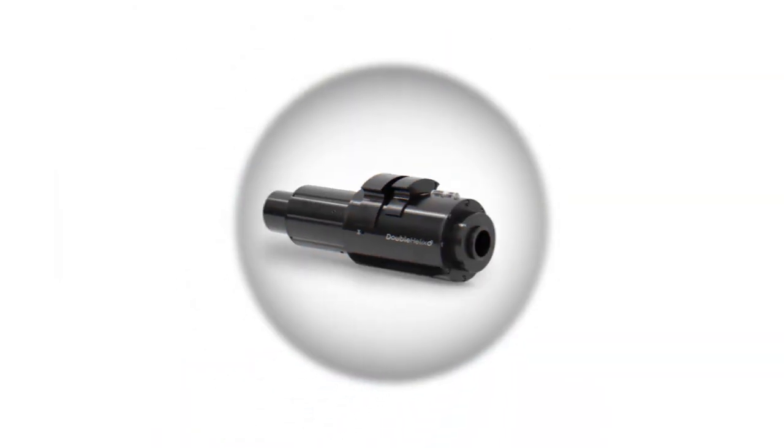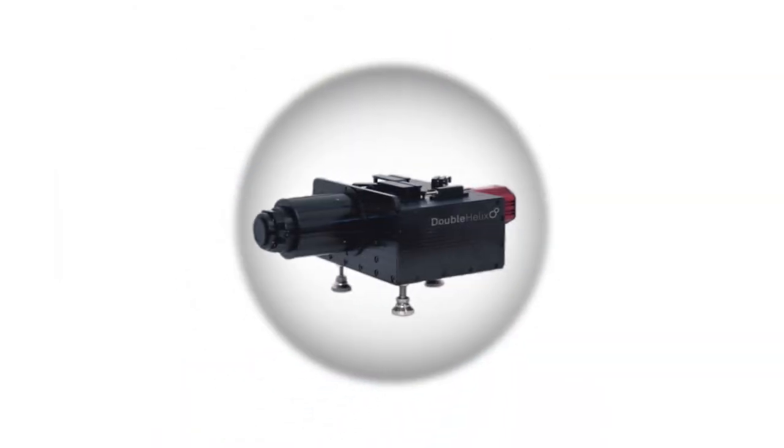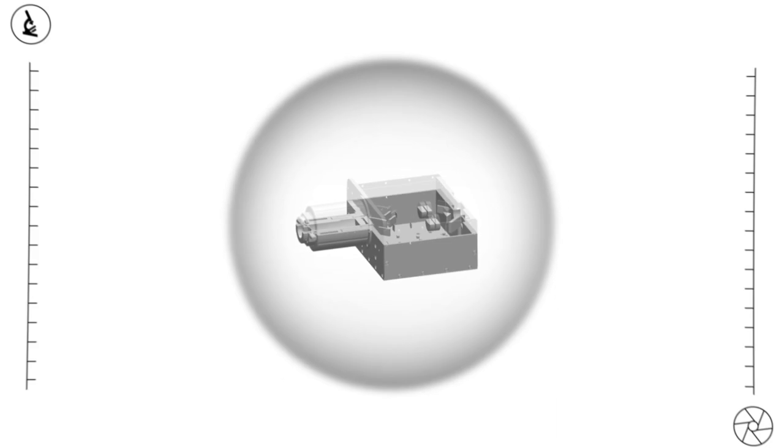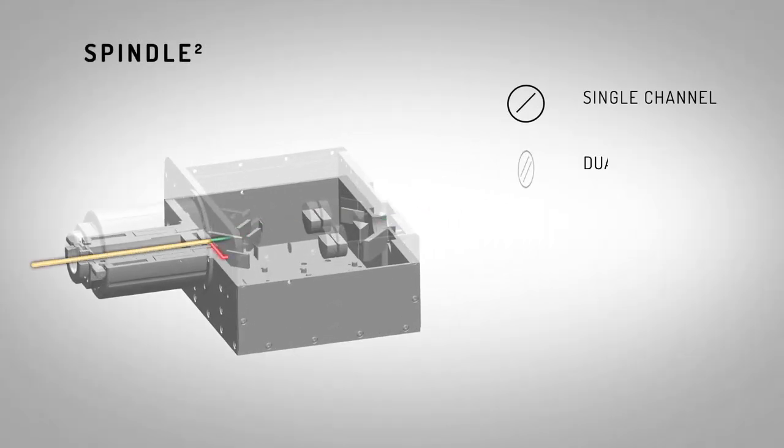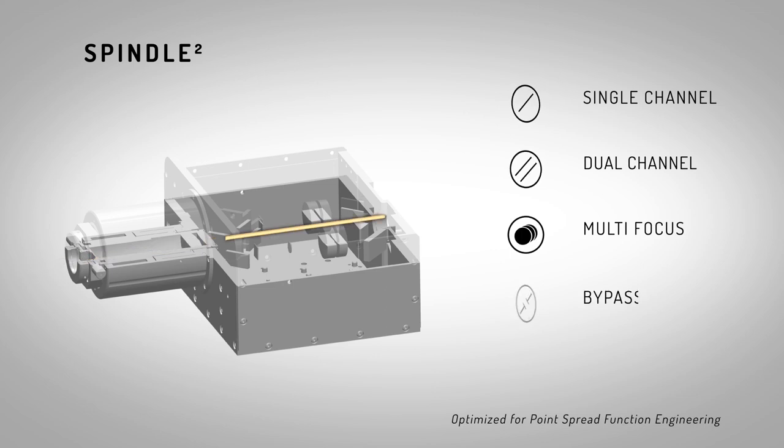And for research that requires even more flexibility, the Spindle Squared builds upon our award-winning technology by offering a compact single-camera splitter combiner that can capture multi-channel imaging down to 20 nanometers of precision in 3D.